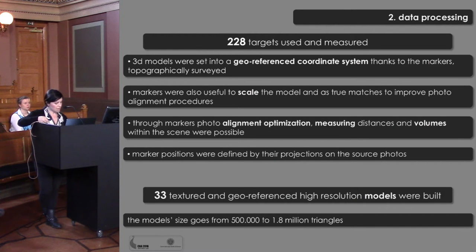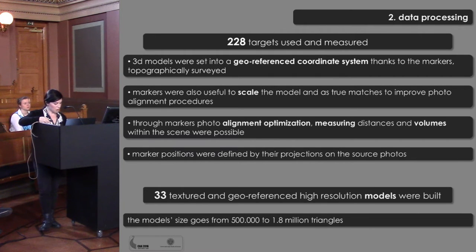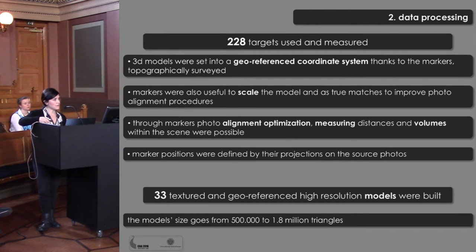228 targets were used and measured. The 3D models were set into georeferenced coordinates thanks to the markers topographically surveyed. Markers were also useful to scale the model and as tie points to improve photo alignment procedures. Through markers, photo alignment optimization, measuring distances and volumes within the scene were possible. Every marker was visible in at least two photos to define its location within the scene. In total, 33 textured and georeferenced high-resolution models were built, with model size ranging from 500,000 to 1.8 million triangles.